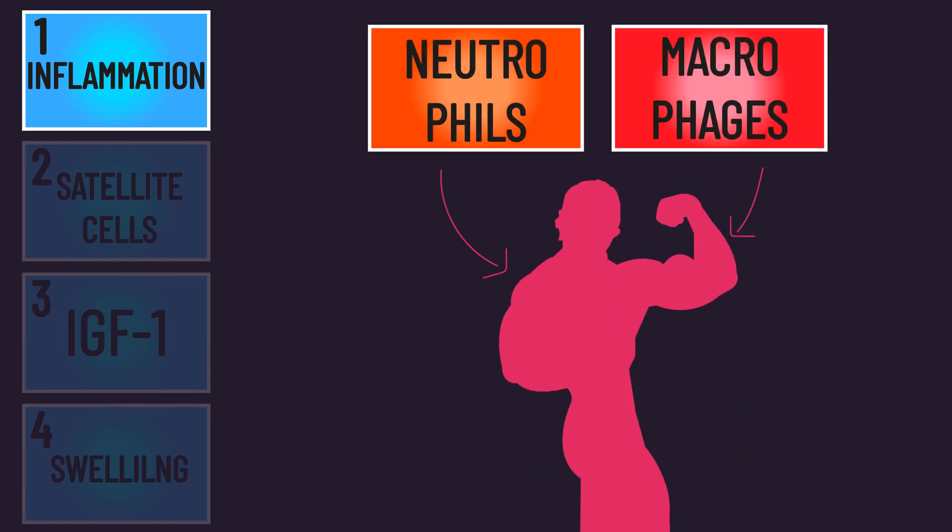The first is that damage results in an inflammation response, and various inflammatory cells have been linked to muscle hypertrophy. The second relates to satellite cells.